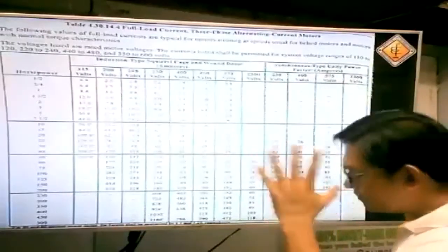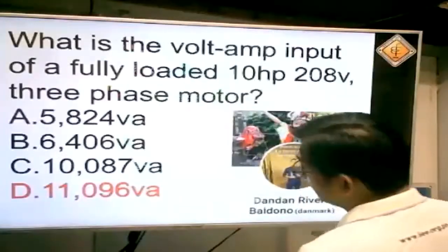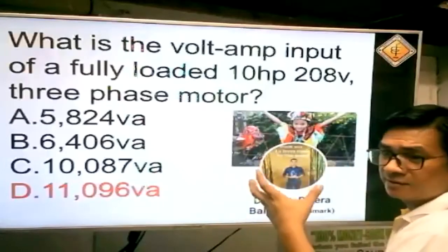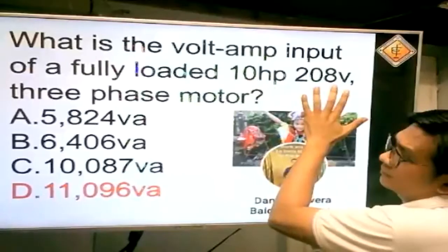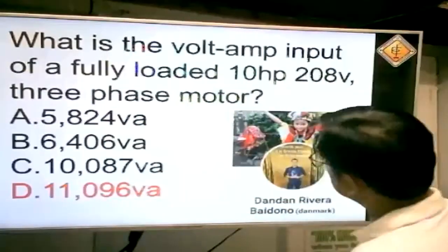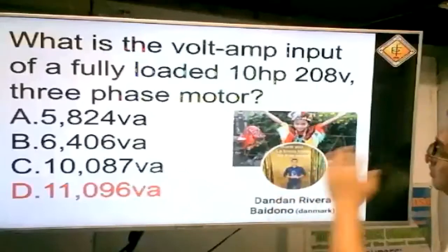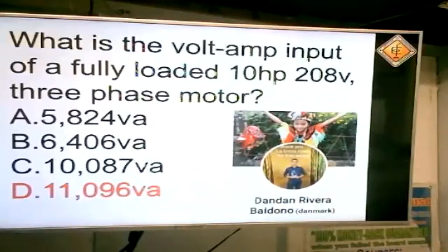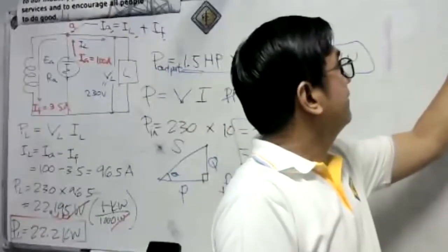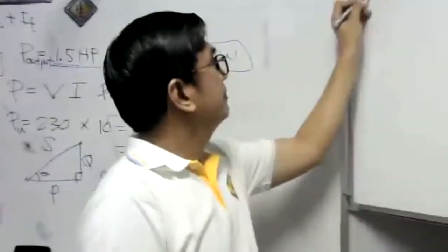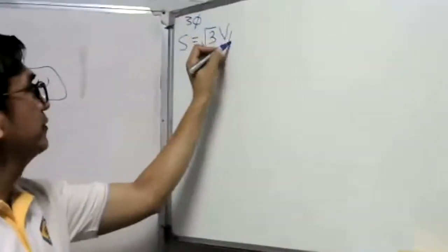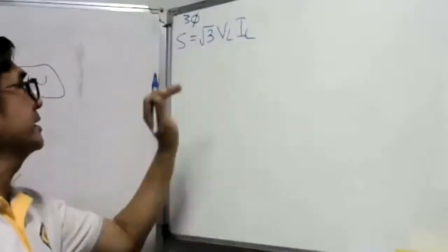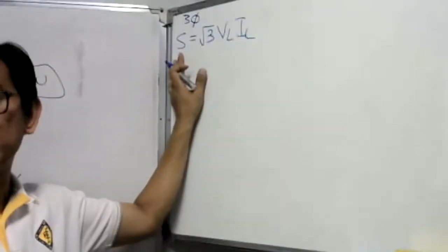Sandali nga yung 230. Yung 30.8. I-times nyo nga ng square root of 3. More or less ilan yun? More or less 53.35. Which is malapit doon sa 55, no? Napansin nyo ba? Approximately yung mga values dito sa 3 phase, times nyo lang ng square root of 3. Yun yun. Magkalapit siya doon sa single phase. So ganun yan.